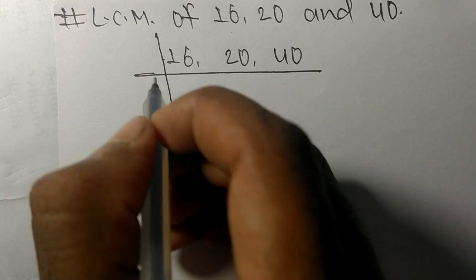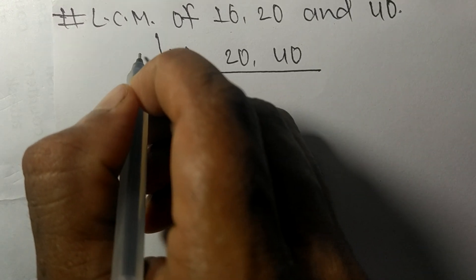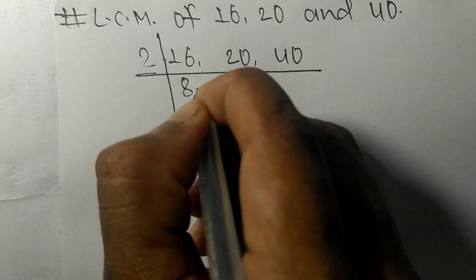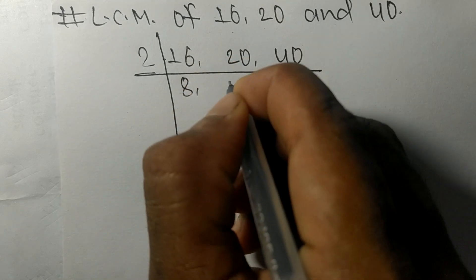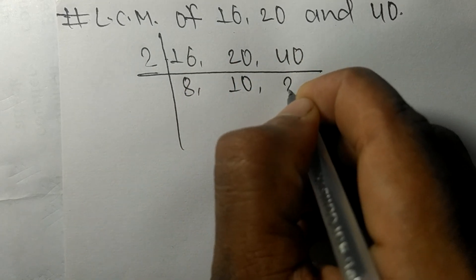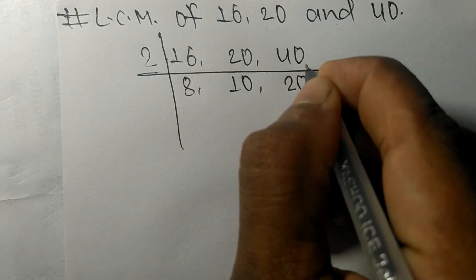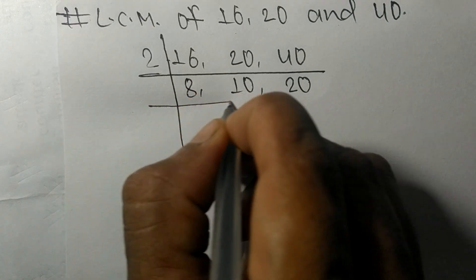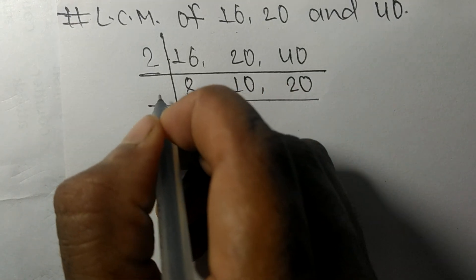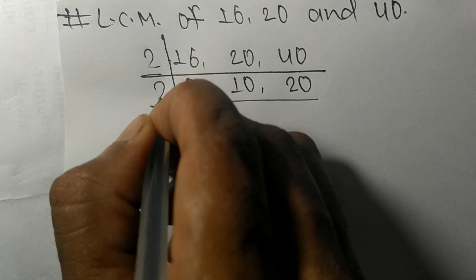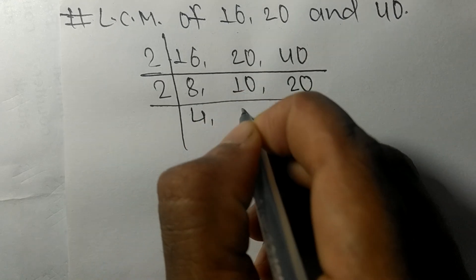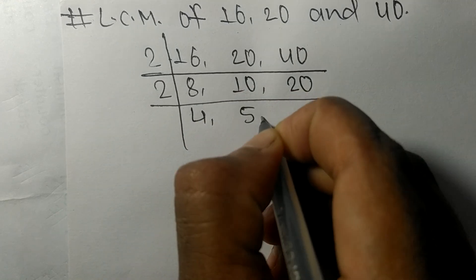All these numbers are divisible by 2: 2 times 8 equals 16, 2 times 10 equals 20, 2 times 20 equals 40. Again, all these numbers are divisible by 2: 2 times 4 equals 8, 2 times 5 equals 10, 2 times 10 equals 20.